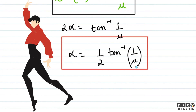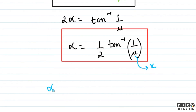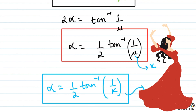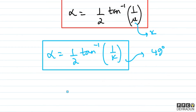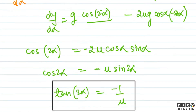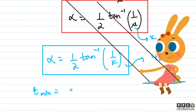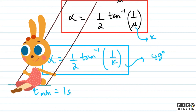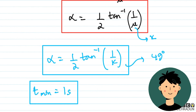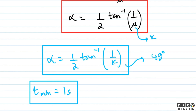Since the coefficient of friction is given as k, we write: alpha = ½ tan⁻¹(1/k). Substituting the given values, alpha comes out to be 49 degrees. To find t minimum, substitute alpha = 49° into t² = 2L sec alpha / (g sin alpha − mu g cos alpha), giving t minimum = 1 second. That's our final answer. I hope this solution was clear. If any doubts remain, feel free to contact me. Take care, bye-bye.